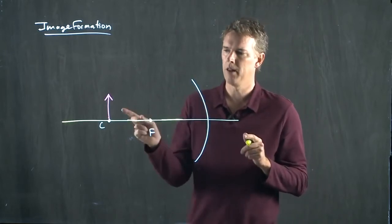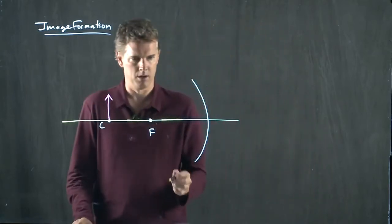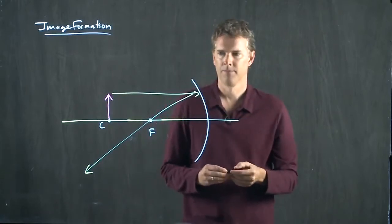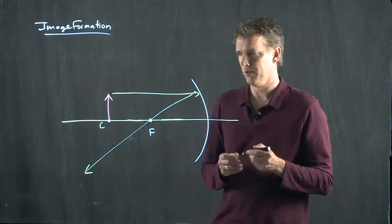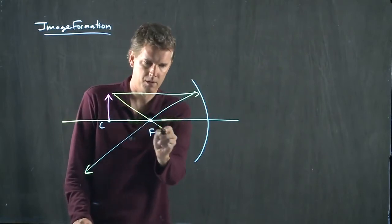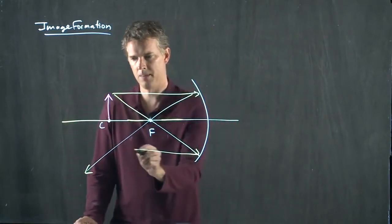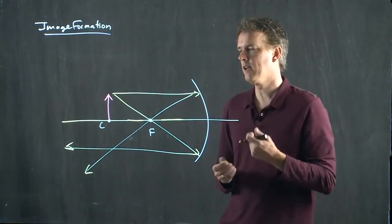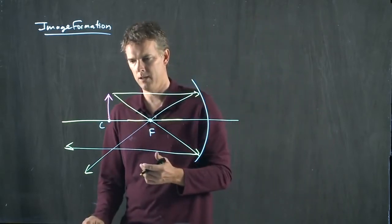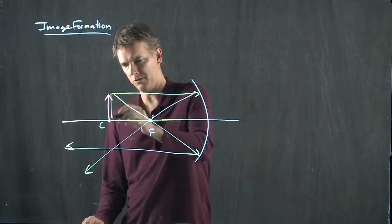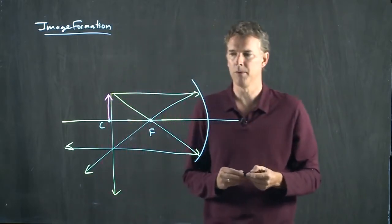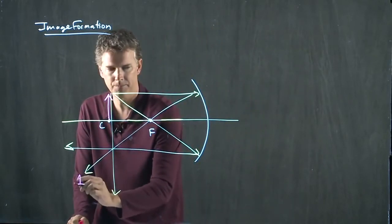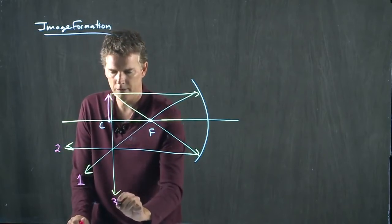Rule number one, parallel rays go through the focus. Here comes a parallel ray, goes through the focus. Rule number two, rays through the focus go parallel. And rule number three is rays through the center don't bend. Well, I guess a ray through the center would be straight down on itself. That would be ray number three. So let's label those and make sure everybody's on the same page. This is ray number one. This is ray number two. And this is ray number three.